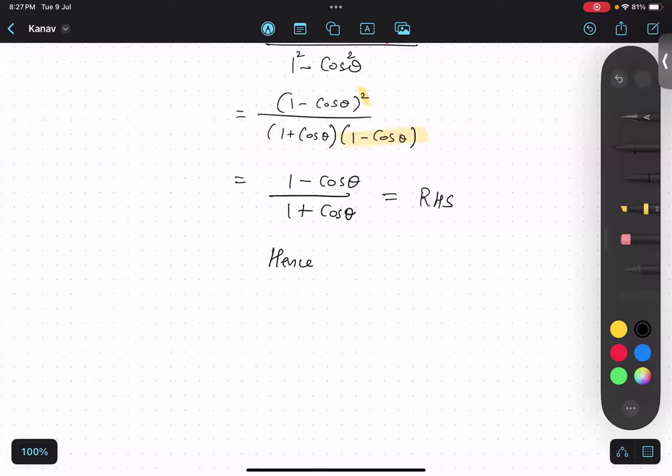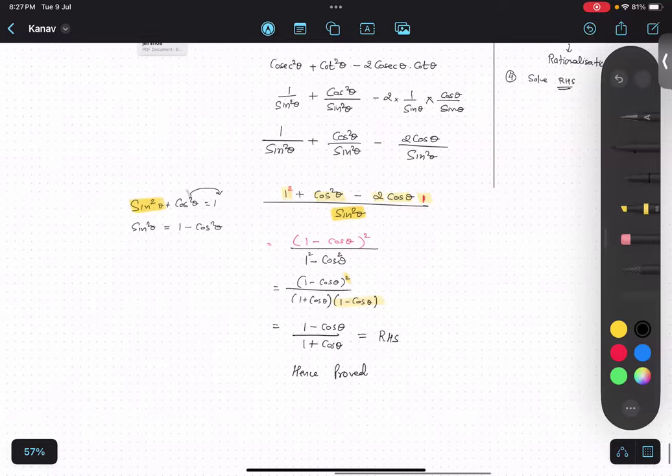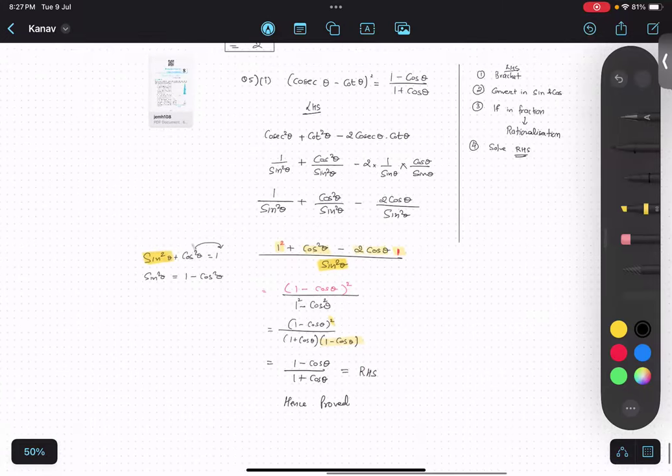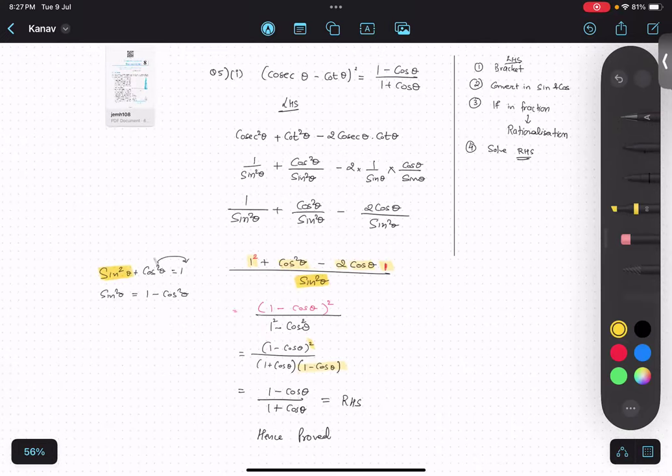This is it. Important thing is that you understand the process how to think. Open the bracket, convert into sine cos and do the steps. Use identities and whatever is required.